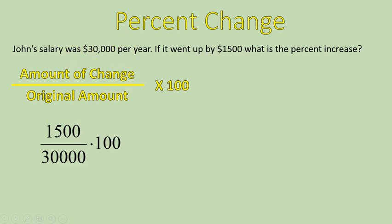$30,000 is the original amount, so that's where it started. If you can pick out those two pieces, then you can set this up and do pretty well at this. So $1,500 divided by $30,000 gives you 0.05, and we multiply that times 100 — in other words, we change that decimal into a percent — and it becomes 5%. John had a 5% salary increase that year. That is how you solve a percent increase question when you're told the amount it increases and the original amount.